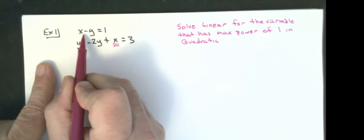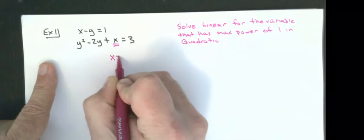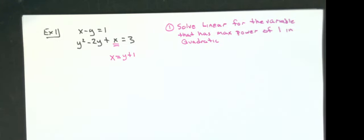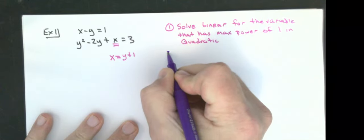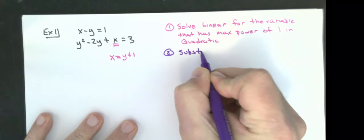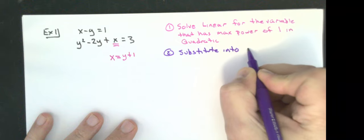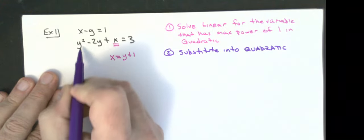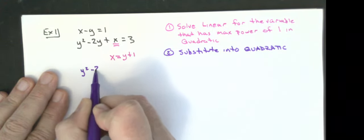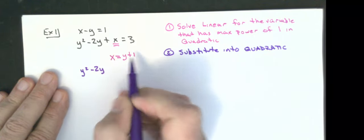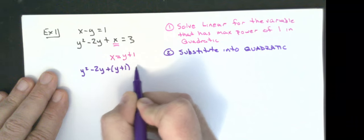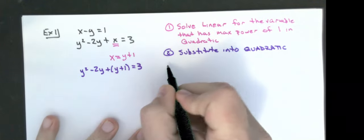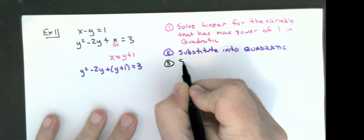Because x is to the first power in the quadratic equation, I want to solve the top equation for x. I'm going to add y to both sides, giving me x equals y plus 1. That was my first step. Now I'm going to substitute this into the quadratic.